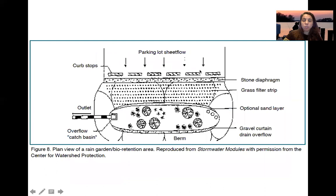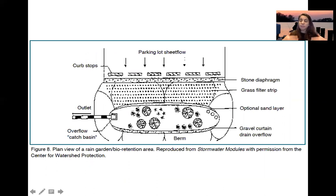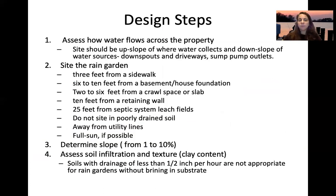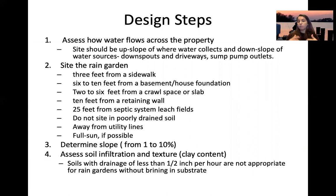A parking lot sheet flow might first pass through a grass filter strip and then into the actual rain garden, which has a berm on the outside to keep water in. If it's a bioswale, there's an optional outlet. Design step one is assessing how water flows across the property. The site should be upslope of the collection point but downslope of all downspouts, driveways, and pump outlets.